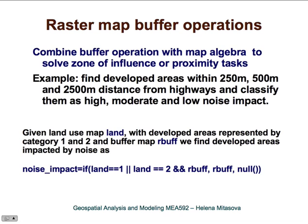Let's look at an example where we want to find developed areas within 250, 500, and 2.5 kilometer distances from highways, assuming that areas close to highways have high noise impact and those farther away have low noise impact. We will be measuring noise impact by distance to highway — a great simplification, but as a first approximation it may work.